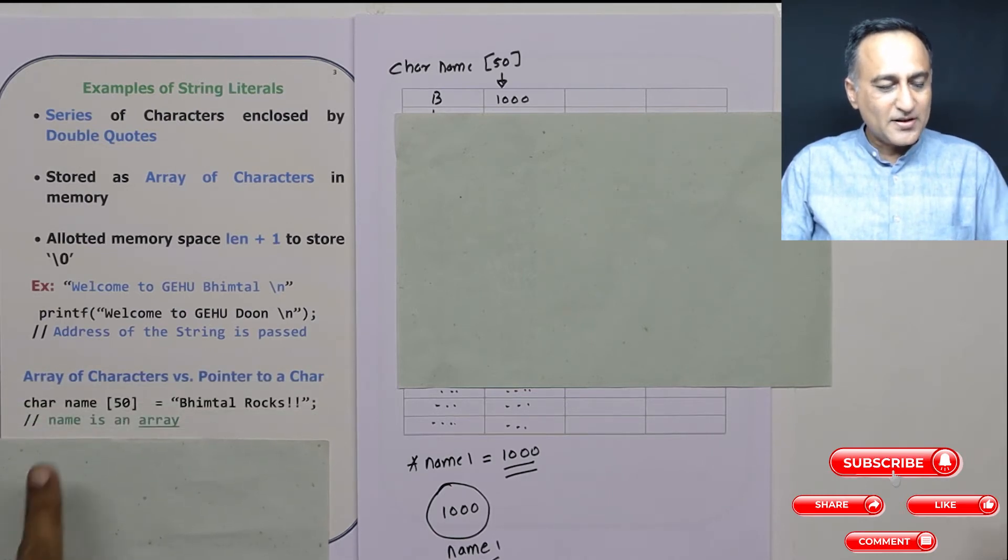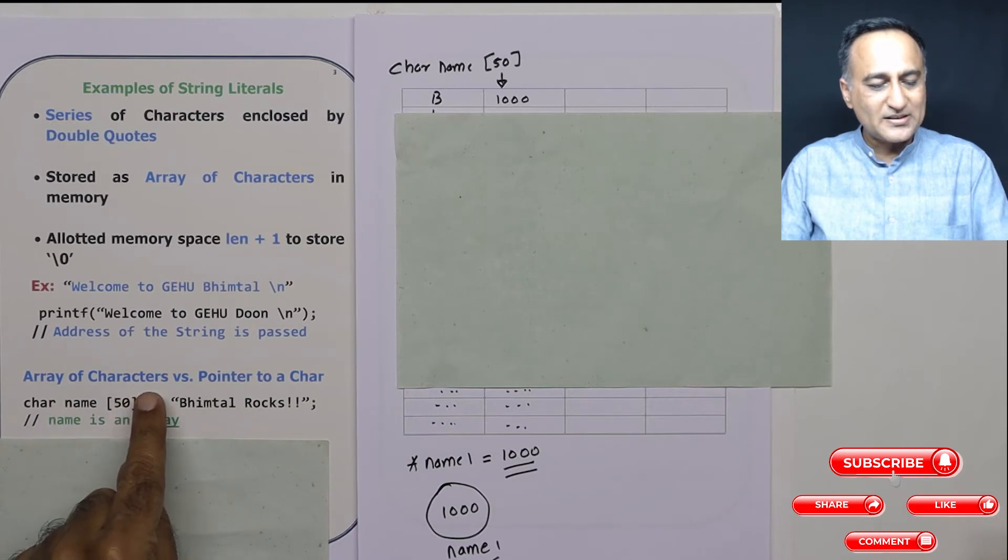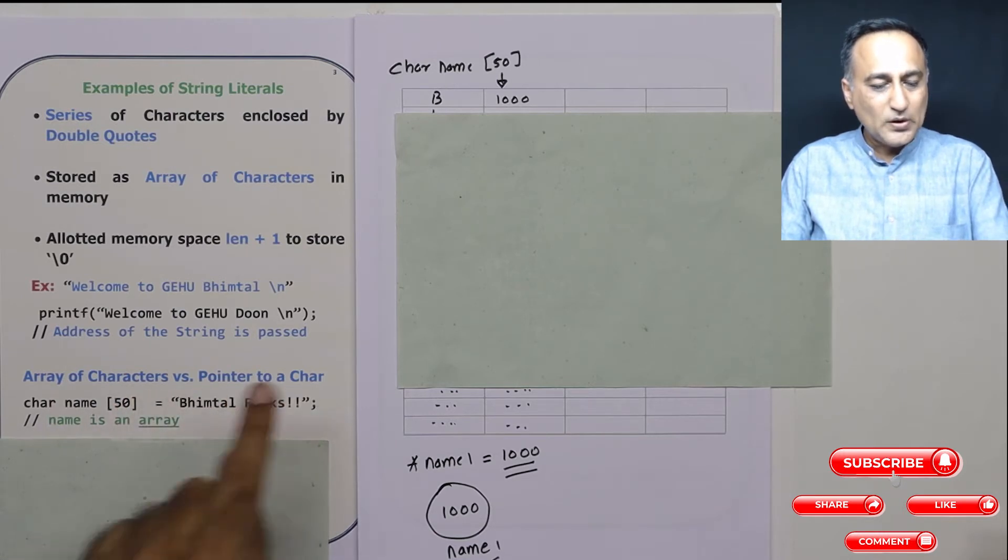Let us try to understand the difference between an array of characters versus pointer to a character.